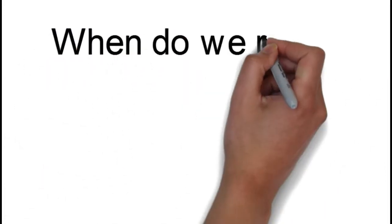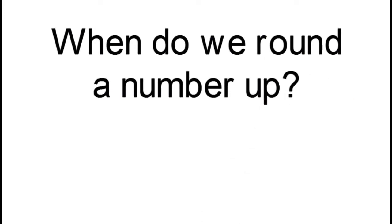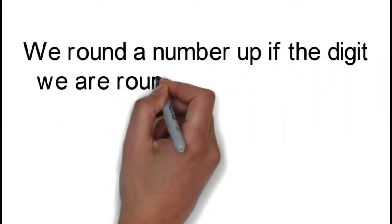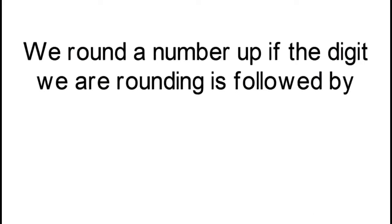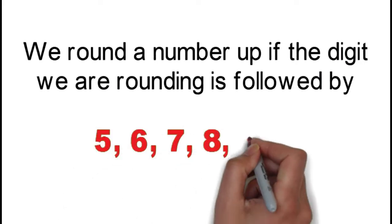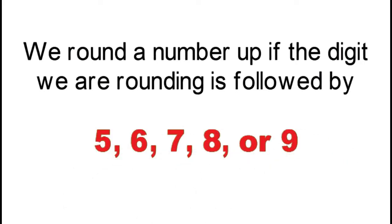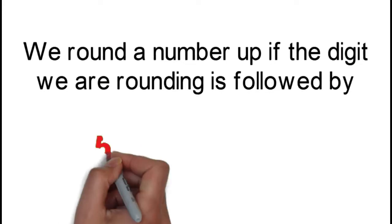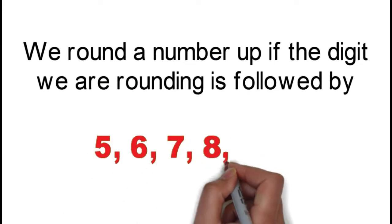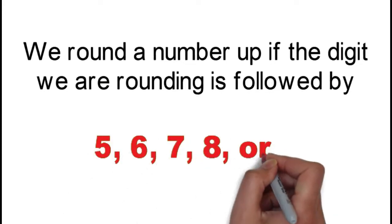When do we round a number up? We round a number up if the digit we are rounding is followed by 5, 6, 7, 8, or 9. Or, if the digit at the right side of the digit we are rounding is 5, 6, 7, 8, or 9.